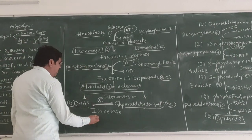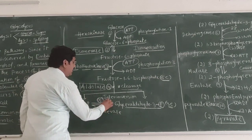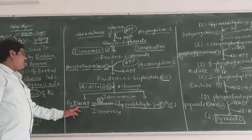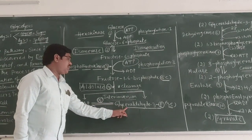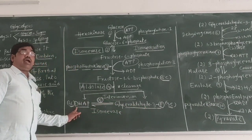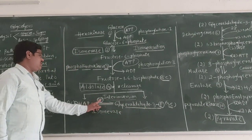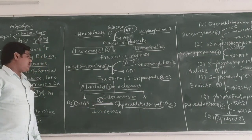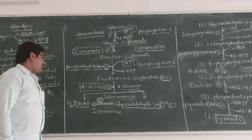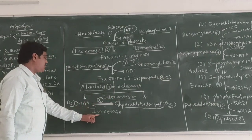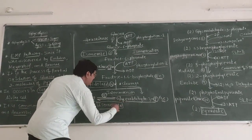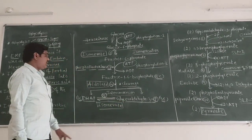The fifth reaction is called interconversion of triose-phosphates. Dihydroxyacetone phosphate is converted into glyceraldehyde-3-phosphate, and glyceraldehyde-3-phosphate can be converted back into dihydroxyacetone phosphate. This reaction is catalyzed by the isomerase enzyme.